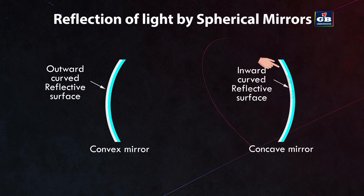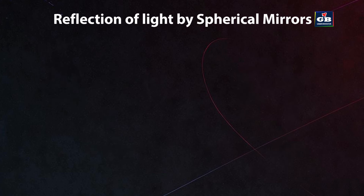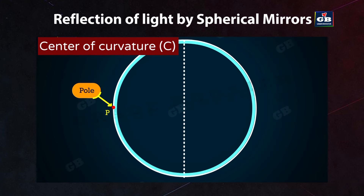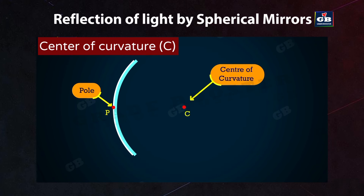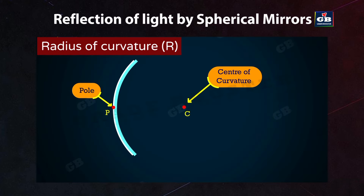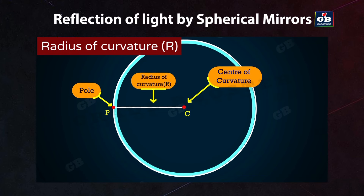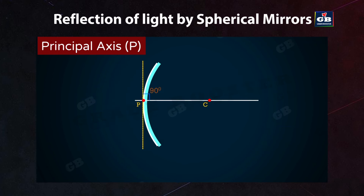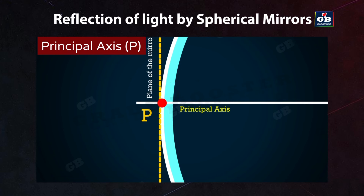To understand reflection by a spherical mirror, we need to know certain terms. Pole (P): the center point of the reflecting surface of a spherical mirror, lying on the surface. Center of curvature (C): the center of the imaginary sphere from which the mirror is derived — behind the mirror for a convex mirror, and in front for a concave mirror. Radius of curvature: the radius of the imaginary sphere of which the mirror is a part. Principal axis: the line joining the pole and center of curvature, which is normal to the mirror at its pole.